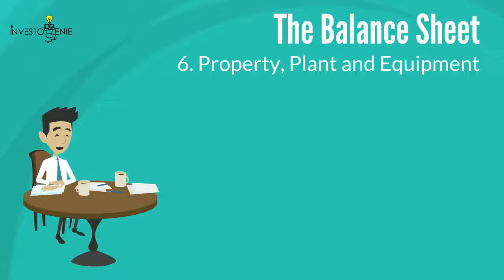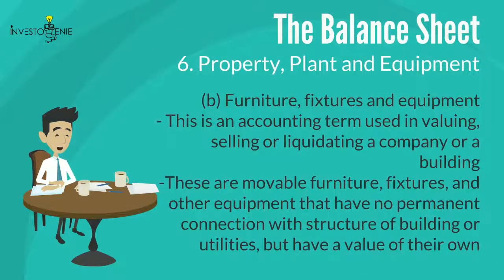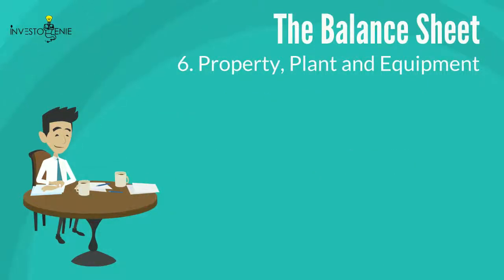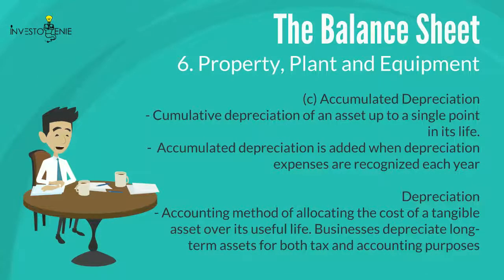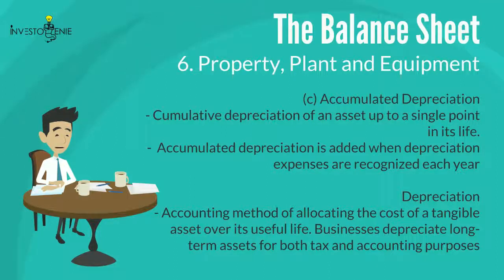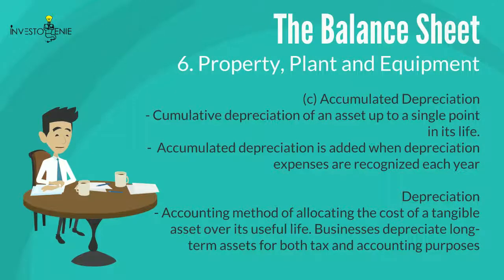Second, furniture, fixtures, and equipment (FF&E) is an accounting term used in valuing, selling, or liquidating a company or building. These are movable furniture, fixtures, and other equipment that have no permanent connection with the structure of a building but have a value of their own. Third, accumulated depreciation is the cumulative depreciation of an asset up to a single point in its life. Depreciation is an accounting method of allocating the cost of a tangible asset over its useful life — businesses depreciate long-term assets for both tax and accounting purposes.